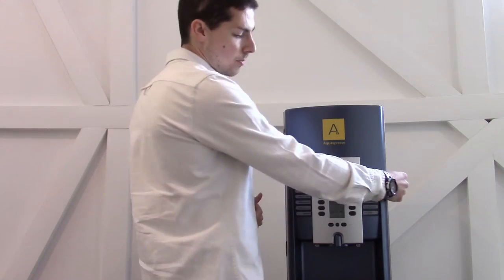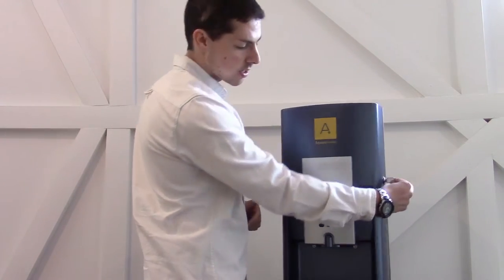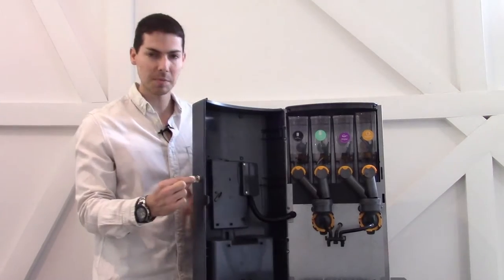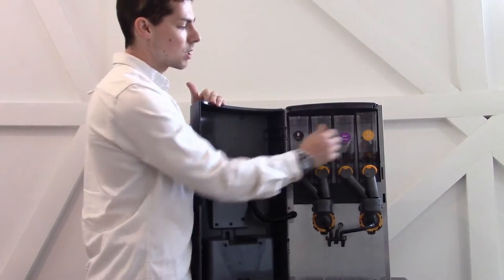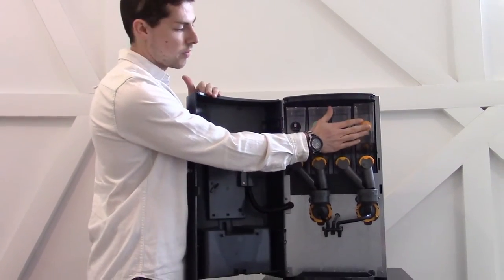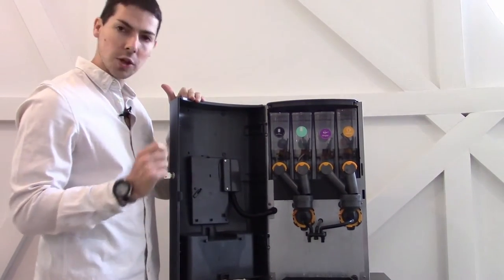So today I'm going to fill it with all four and we're going to go through exactly how to do that. Firstly, you've got a little lock on the outside over here. Machine opens up and you have your four canisters: chocolate, milk, sugar, and coffee.